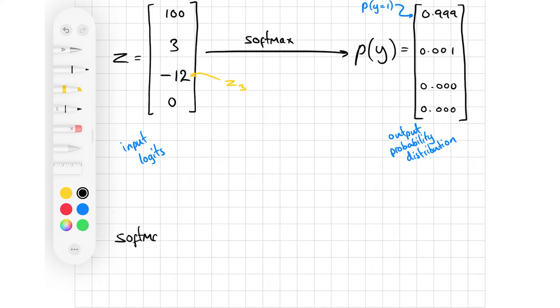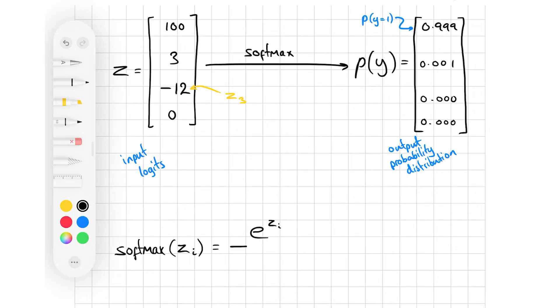Firstly, for each element in the input vector, the softmax raises e to the power of that number, which makes it positive, as any real number to any power is positive. And this ensures that we don't end up with negative probabilities. Then the softmax divides the result by the sum of those values to get it as a fraction of the whole. And this ensures that the output adds up to 1.